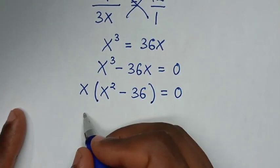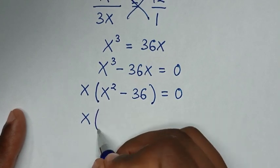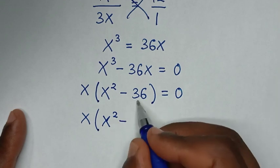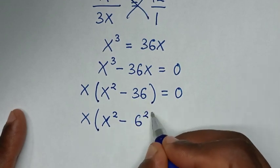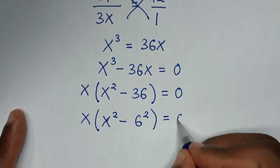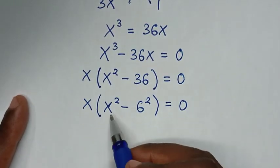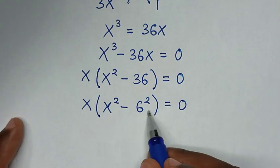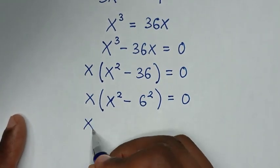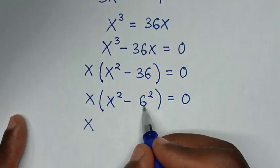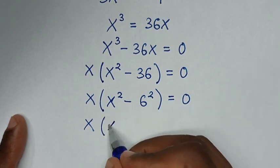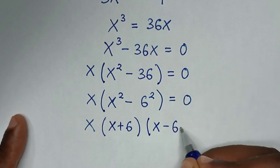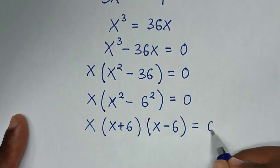Then it will be x times bracket x square minus 36, and 36 is 6 square. This is in the form of a difference of squares, so x square minus 6 square is the same as bracket x plus 6 bracket x minus 6. So we have x times bracket x plus 6 bracket x minus 6 bracket is equal to 0.